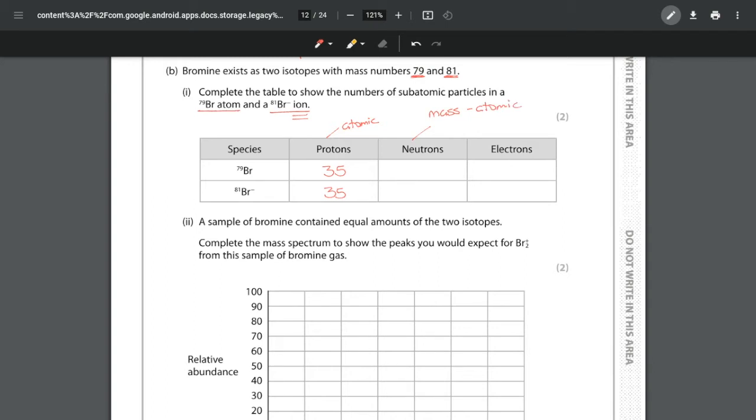To work out your neutrons, you do mass number subtract atomic number. We've got 79 - 35 = 44 neutrons, and 81 - 35 = 46 neutrons. The third column is where a lot of people get caught out.